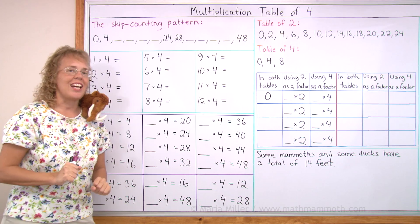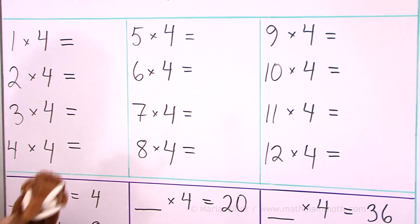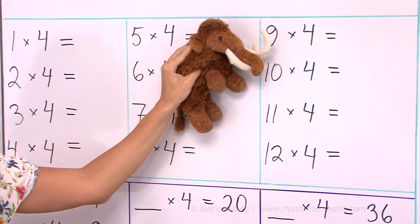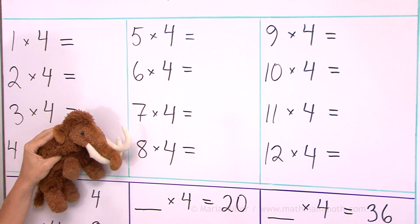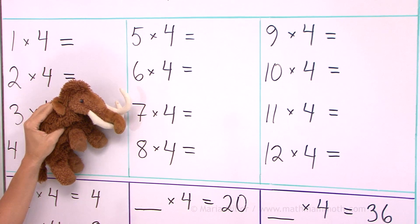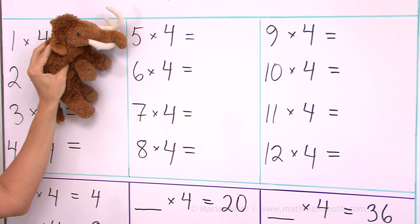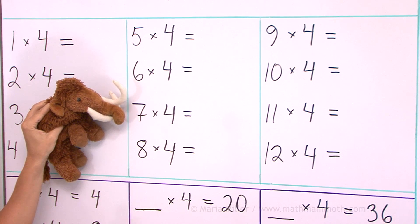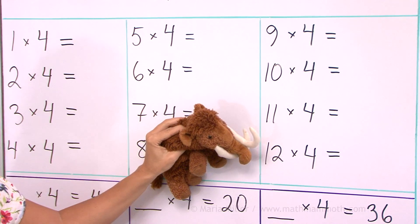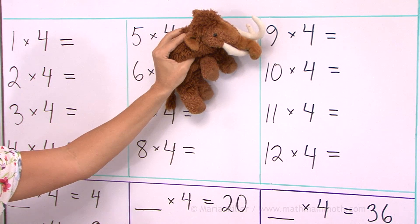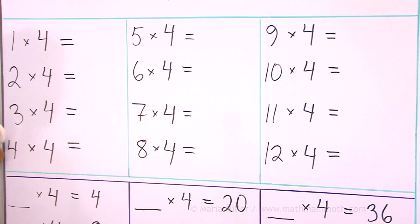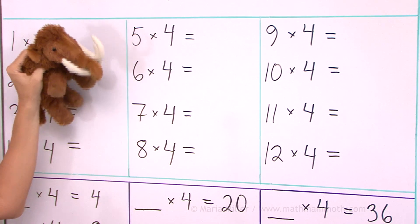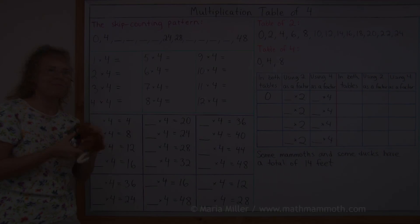And now we do it again and I'm not going to say the answers. Matthew, you come and do it. 6 times 4? 9 times 4? 8 times 4? 7 times 4? 5 times 4? 4 times 4? 3 times 4? 7 times 4? 12 times 4? 9 times 4? 4 times 4? 8 times 4? 9 times 4? 10 times 4?